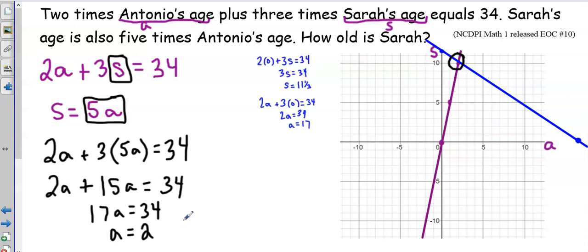So to find Sarah's age, all I need to do is substitute this 2 for A back into one of the equations. I'll use S equals 5A, so S equals 5 times 2, and I have 10. So Antonio is 2 and Sarah is 10, which answers my question. This is the substitution method where you substitute one part of...